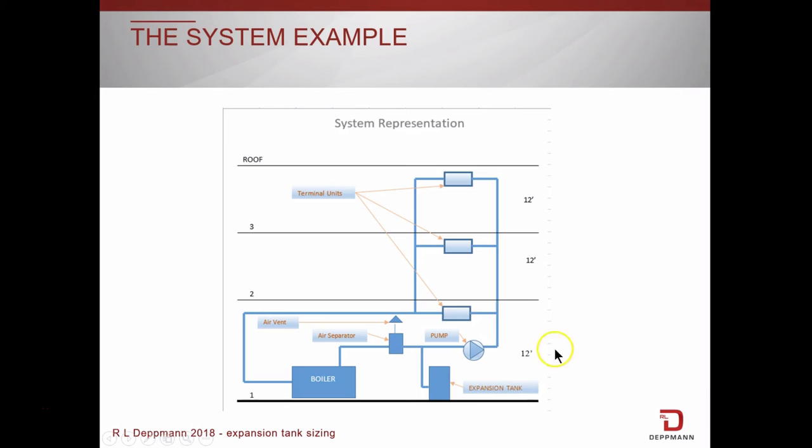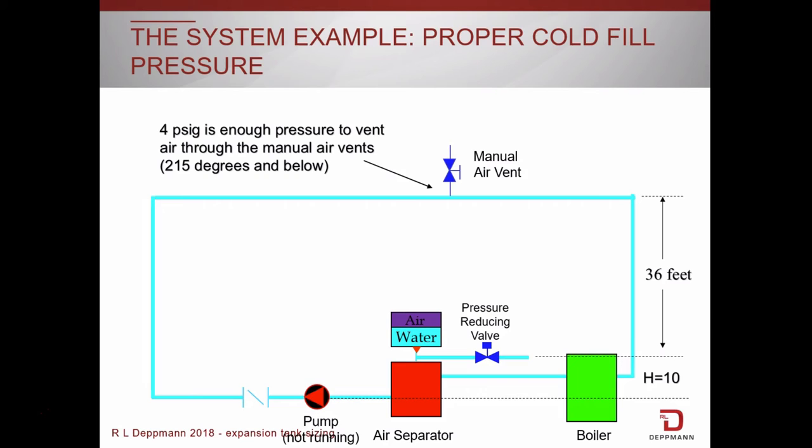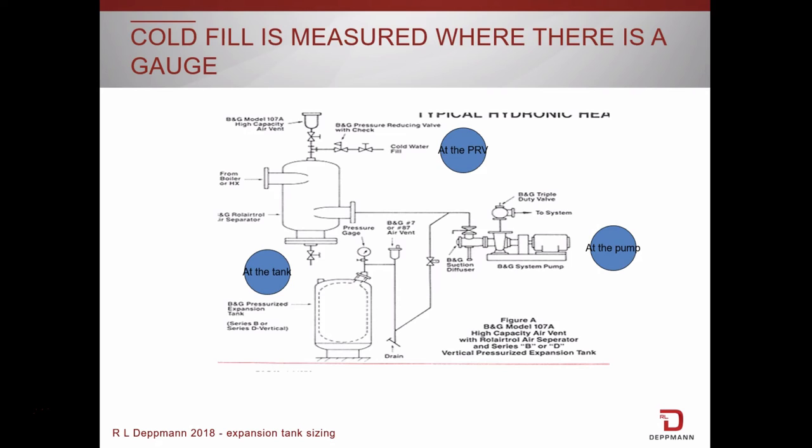So back to our building example. Note the elevations shown here on the side. Here you see where the PRV ties into the piping system. In this example there is 36 feet of elevation from the PRV to the top of the building piping system. 36 feet head equals 15.6 psig. Now we add 4 psig for the air vents and the cold fill pressure at the PRV is set to about 20 psig.